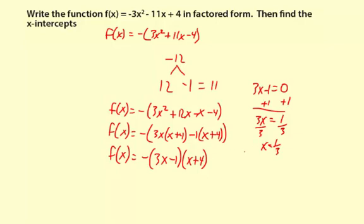To find the other zero, x + 4 = 0. Subtract 4. x = -4. So there we have 1/3 and -4 as our zeros. And I like to write them in increasing order.